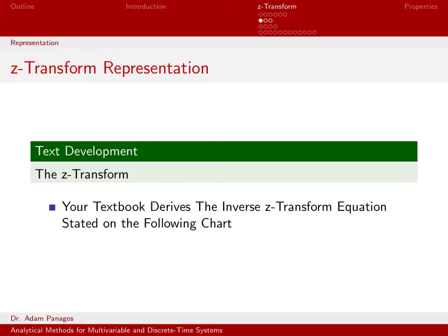Now that we have a little motivation for z to the k's and why they're important — because they're eigenfunctions of discrete time linear time invariant systems — and we've seen how an input of z to the k yields just a z to the k scaled by this h of z quantity, that gives us a clue to what a useful definition of the z-transform would be.